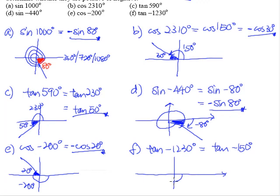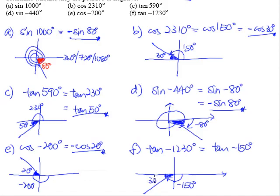Going clockwise, negative 90 comes first, then negative 150 degrees is in the third quadrant. The basic acute angle is 30 degrees. So tangent negative 150 degrees is the same as tangent 30 degrees. Using 'All Signs Teacher Crazy,' T for tangent in the third quadrant is positive, so the answer is positive.